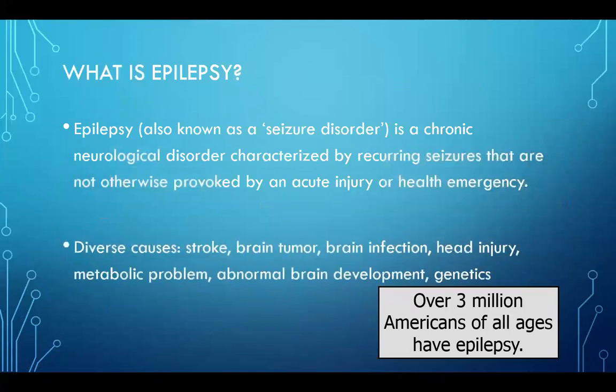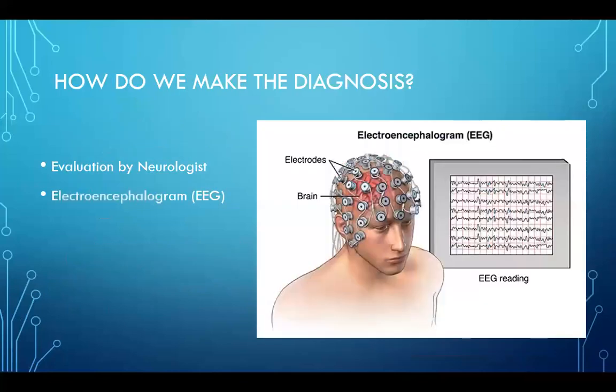Epilepsy is extremely common, with over 150,000 new cases annually and over 3 million Americans affected with epilepsy of varying ages. The diagnosis of a seizure is typically based on the clinical history provided by a witness of a concerning episode. For example, if a parent explains that their child was at baseline, then suddenly fell to the ground, started shaking their entire body, bit their lip, drooled, had their eyes turned to one side, followed by a slow stopping of the shaking and acting very sleepy — this would be a story extremely concerning for a seizure.